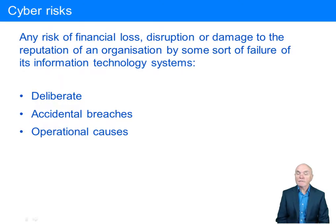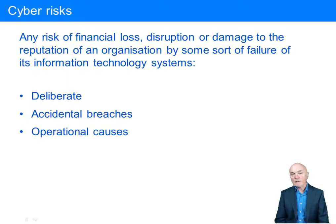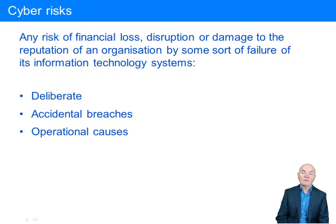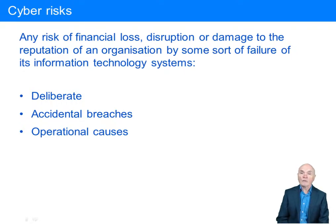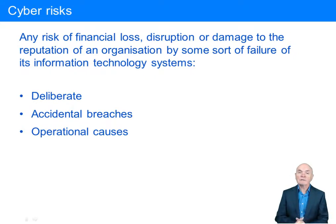The failure could be deliberate — for example, it could be a disgruntled employee, a rival, or just a malicious actor of some sort. It could be accidental breaches, for example where an employee enters incorrect information. We've had examples of airlines where intercontinental flights were on sale for about $5 until it was discovered, simply because somebody entered $5 instead of $500. And there are operational causes like machine failure, or a fire breaking out and machinery being destroyed and data being lost.